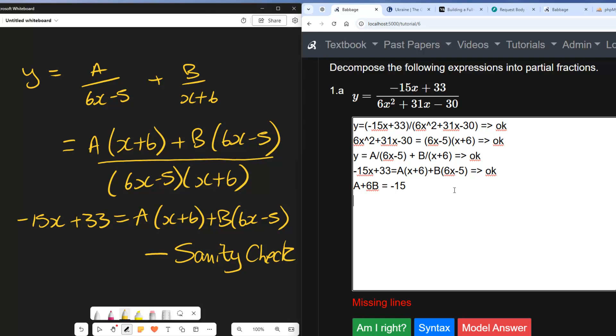And now I'm going to take everything that has no x's in it. So we've got A times 6, so that's 6A, and we've got B times -5, so that's -5B, and that is equal to 33. And am I right so far? So far so good.